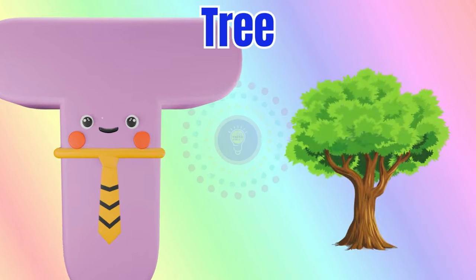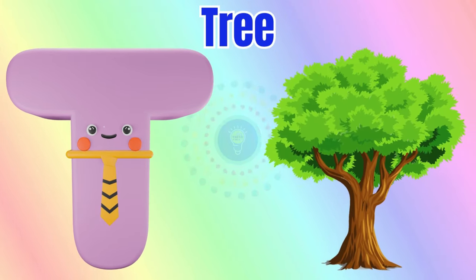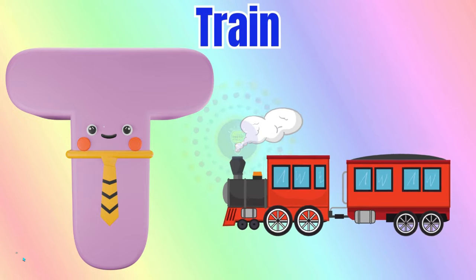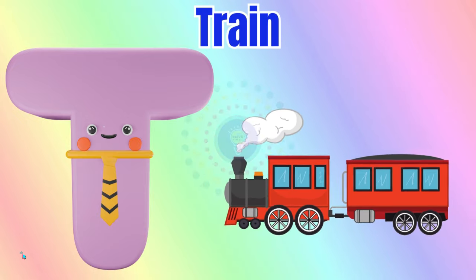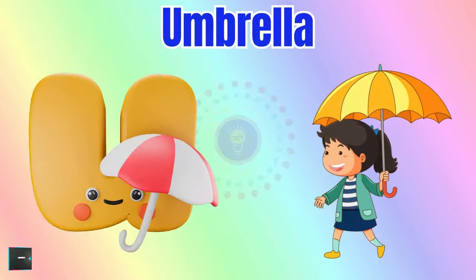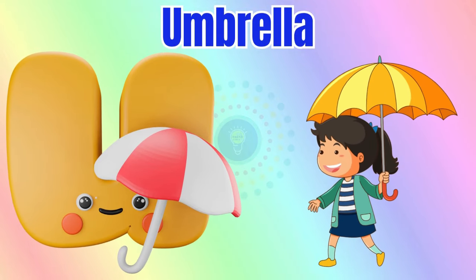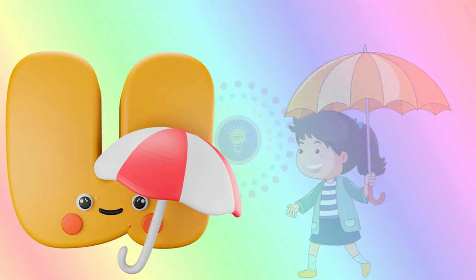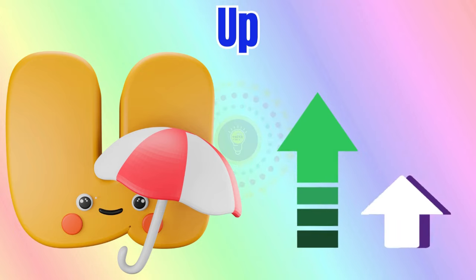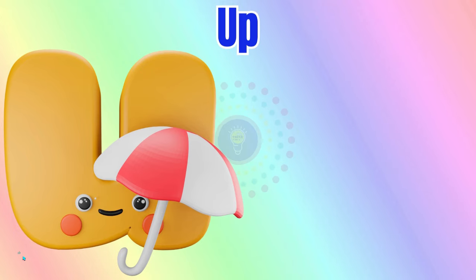T is for tree, t-t-tree. T is for train, t-t-train. U is for umbrella, u-u-umbrella. U is for up, u-u-up.